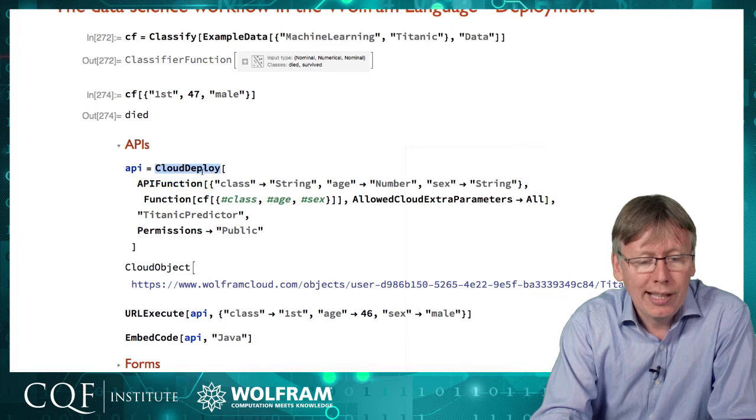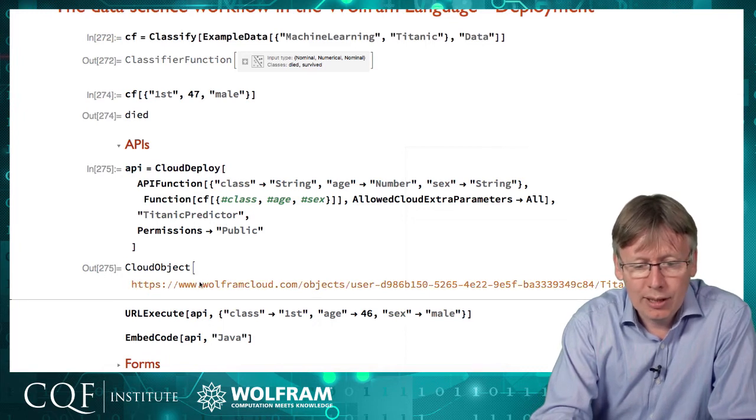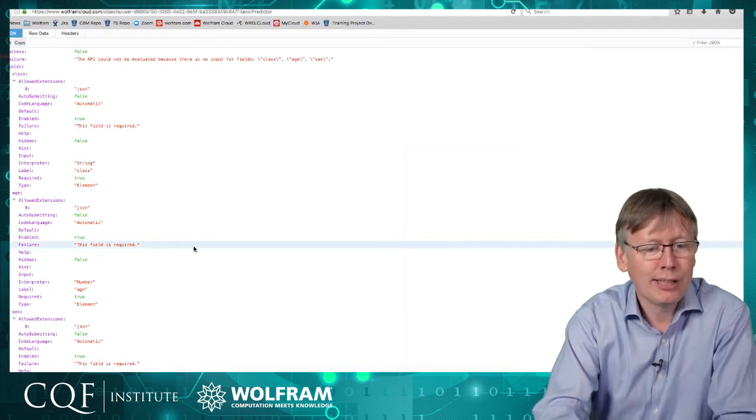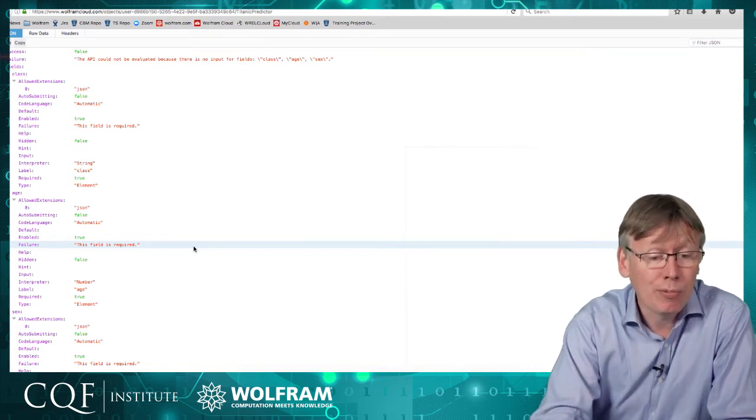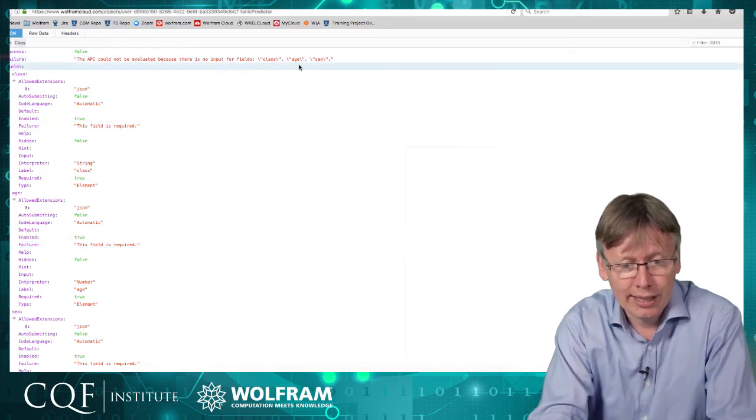And then I'm going to deploy that to the cloud, and I'm going to set the permissions for that to be public, so that anyone in the world can use this API. And now that I've pushed that to the cloud, we've got a URL here for it. And we can go there and point a web browser at it, and you can see that we get some kind of JSON response that could be interpreted by a computer program. And it's failed here because I haven't given it the parameters that I expected. So it's given me a failure message that I didn't give it the class, the age, and the sex.